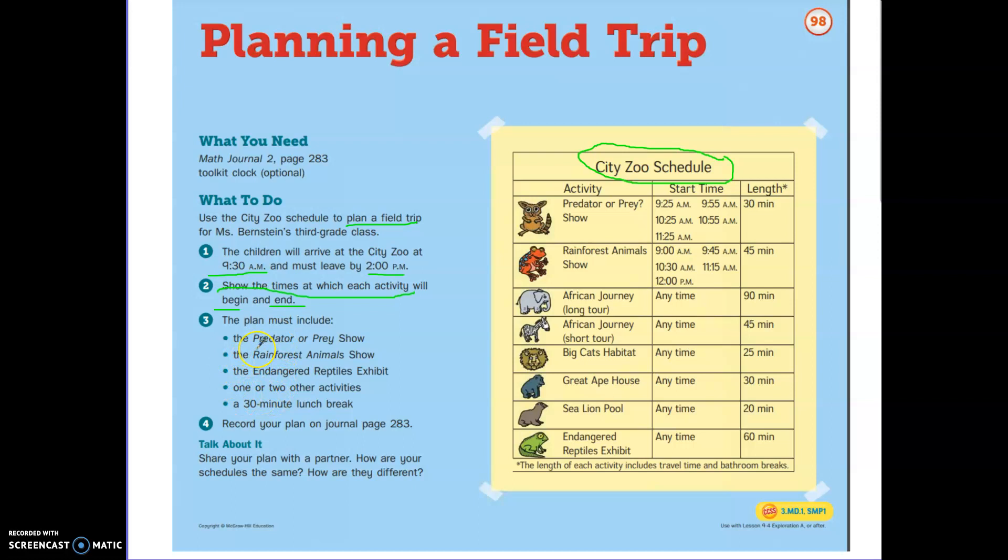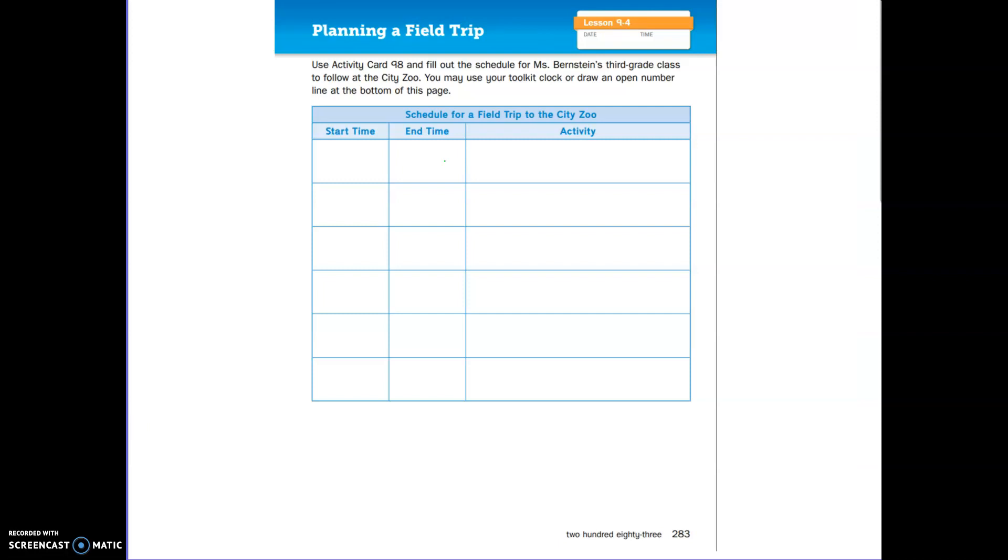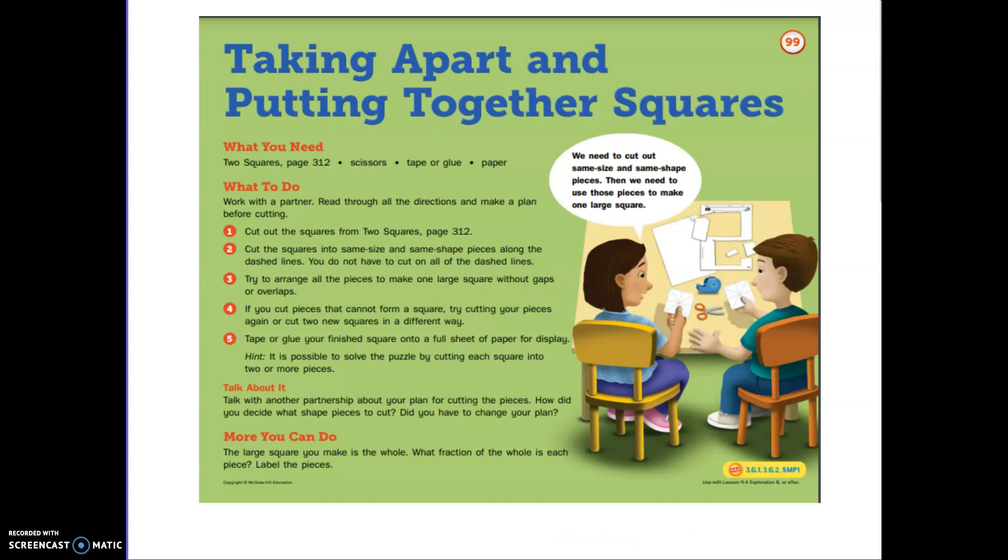Here's where you can write your start time and end time. The plan must include: you have to go to the predator or prey show, you have to go to the rainforest animal show, you have to see the endangered reptiles exhibit, you have to pick one or two other activities, and you have to include a 30-minute lunch break. There are certain times for starting these events. You have the length of how long some of those activities are. You get to pick and choose when you do these activities to fit into your time frame of 9:30 to 2 p.m.